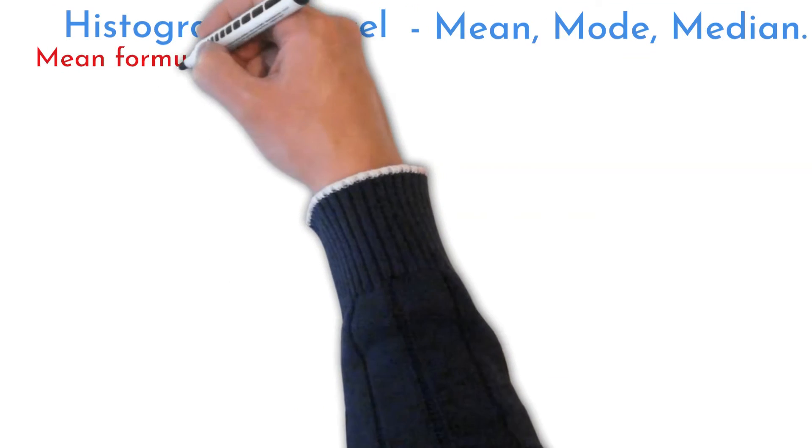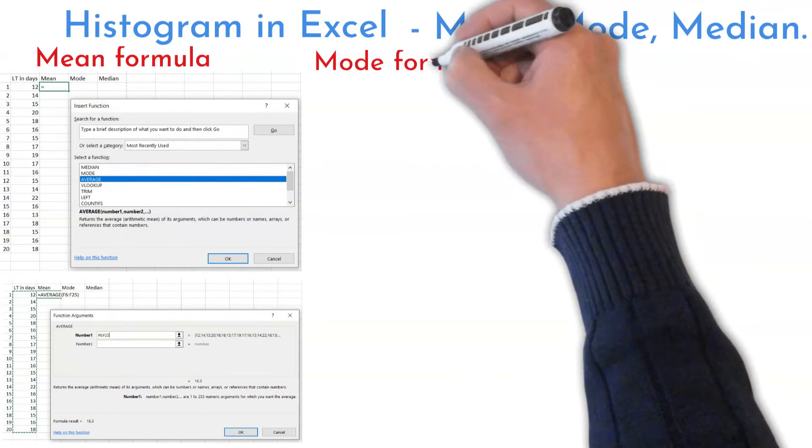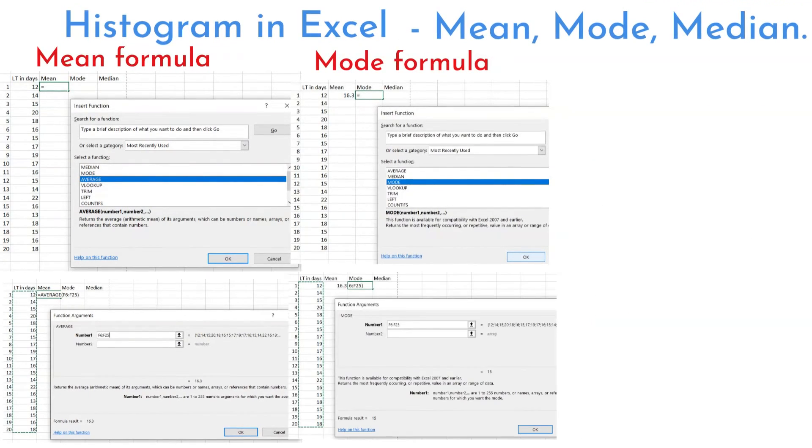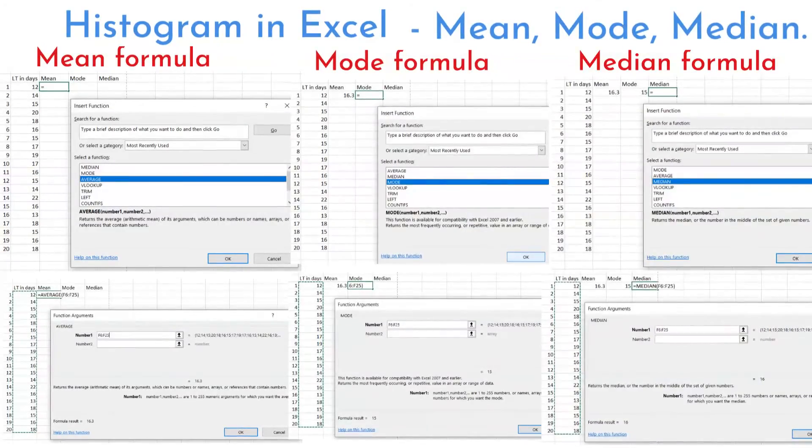Formula for mean: insert function average, and select all data. Formula for mode: insert function mode, and select all data. Formula for median: insert function median, and select all data.